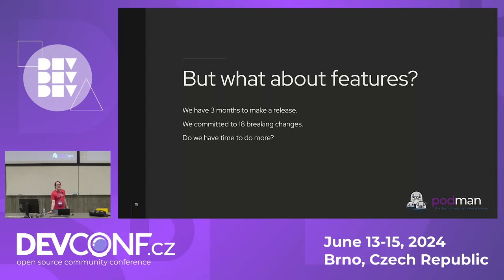Finally: features. I know I said at the beginning that a 5.0 should be exciting, and I've been talking a lot about things we broke and removed. We had about three months to make this release and committed to 18 different breaking changes — our team just didn't have time to do more. However, we have a community, and the community came to our rescue. Special thanks to anyone who contributed to Quadlet during the 5.0 cycle — we had a lot of very good Quadlet changes, including support for Pod units. We were afraid this was going to be the Podman Snow Leopard release where we did nothing but remove things, and it wasn't.